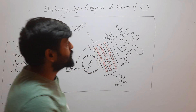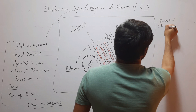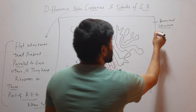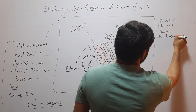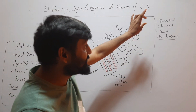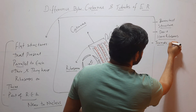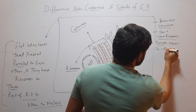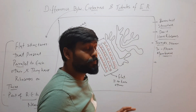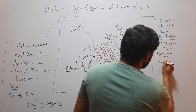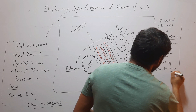Now coming to tubules. Tubules are branched structures that don't have ribosomes. These structures don't have ribosomes and they are branched. They are present nearer to the plasma membrane, and these structures are part of smooth endoplasmic reticulum. These structures are called tubules.